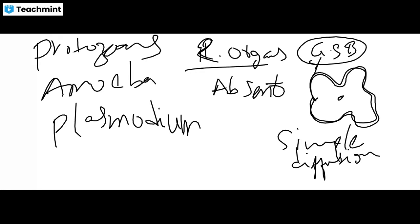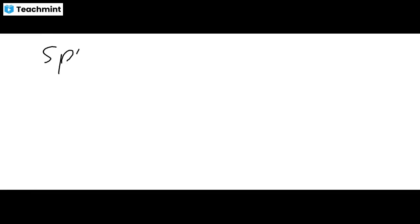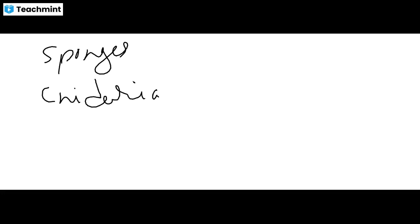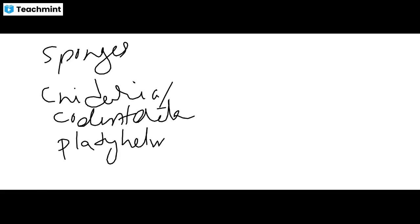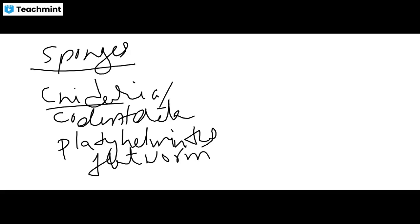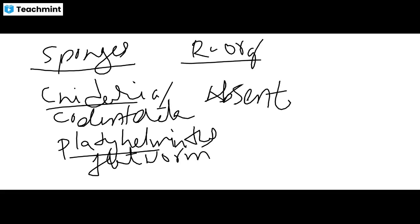Next, we will look at lower organisms such as sponges, which belong to phylum Porifera, phylum Cnidaria, phylum Coelentrata, and phylum Platyhelminthes, also known as flatworms. In all organisms belonging to phylum Porifera, Cnidaria, and Platyhelminthes, respiratory organs are absent. But they also respire through their general body surface.